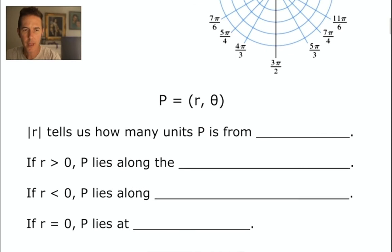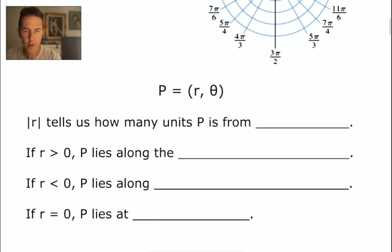Notice though, that the absolute value of the r value tells us how many units our point is away from the pole. And if the r value is greater than 0, then our point p lies along the line or the direction theta.